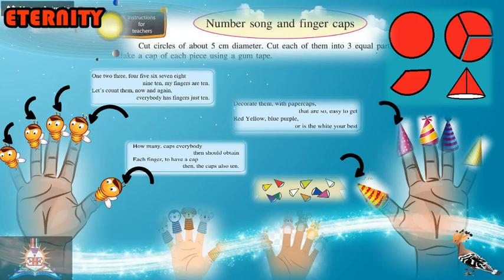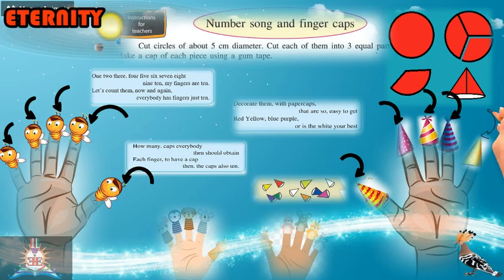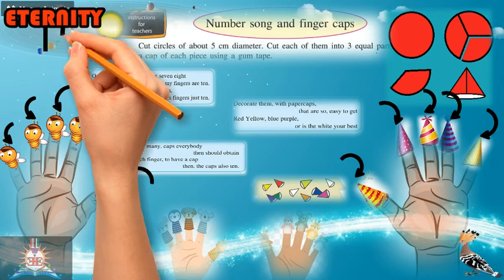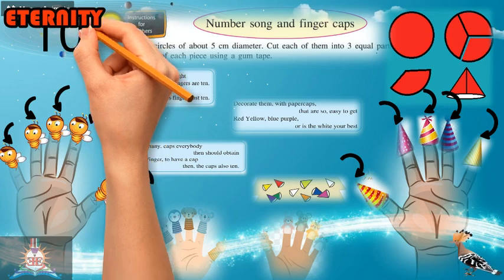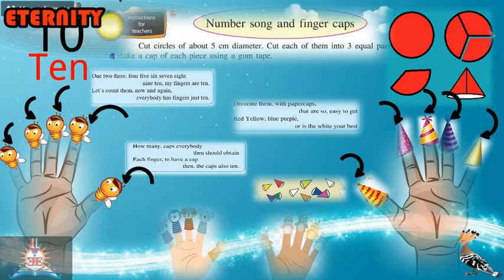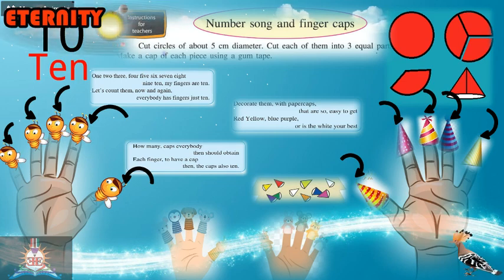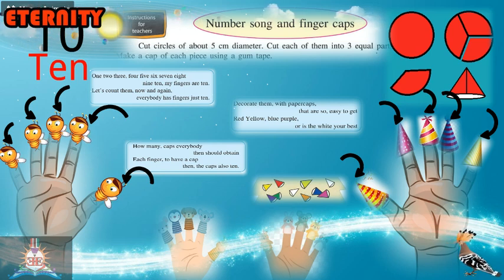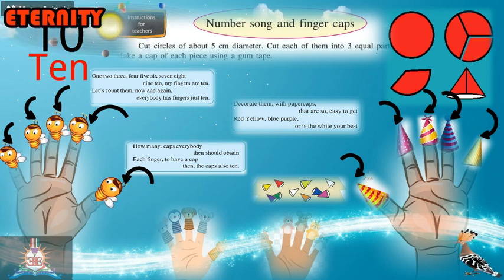See how to write 10: 1, 0 — 10. Make paper caps at home and put one on each finger. Then count each finger while wearing the caps. Keep practicing this — 10. This activity will help you understand easily.